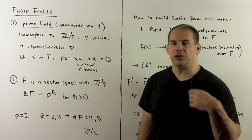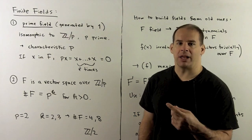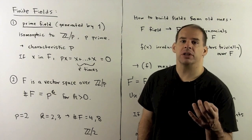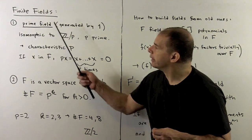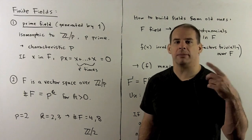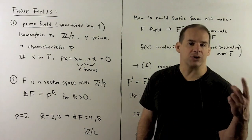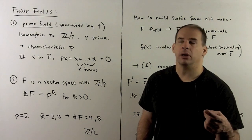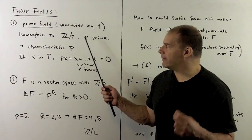Now what about fields that are not of prime order? We want to apply our results on maximal ideals and fields to produce fields of this type. First let's review the basics of finite fields. Inside a finite field we have the prime field — the small subfield generated by the element one — which is always going to be Z mod p with p prime, or the rational numbers. Because our field is finite, it's going to be Z mod p.